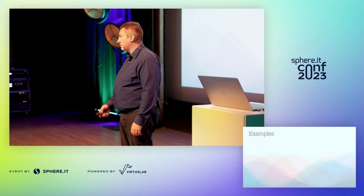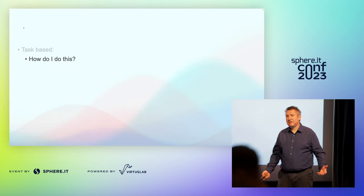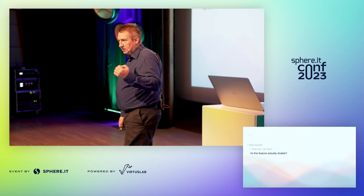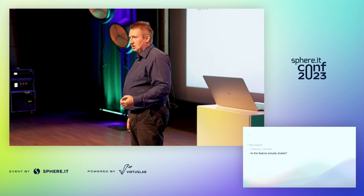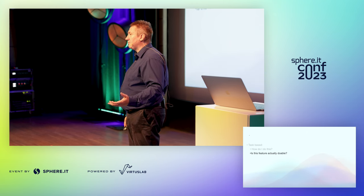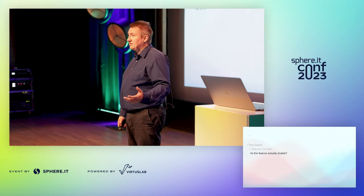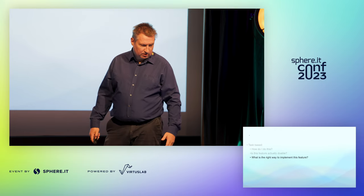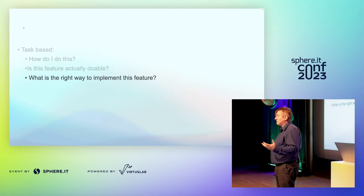When you're a junior developer, the first question you generally ask is: how do I do this? As you get more senior, sometimes the question becomes: is this actually possible? A classic example is NP-complete problems — sometimes you're given a task and the answer is yes, in theory it can be done, but in reality you need more time than the lifetime of the universe to complete it. So the task is not feasible. What's the right way to implement this feature? These are all questions we ask every day.